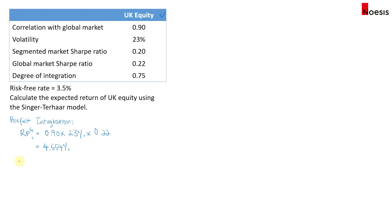Under complete segmentation, the risk premium equals 1 times 23% — remember the correlation is always set to 1 — and then the Sharpe ratio is based on the segmented market, which is 0.2. So this equals 4.6%.